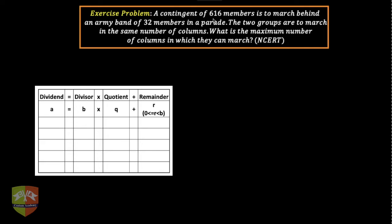The question says a contingent of 616 members—it's always a good practice to highlight the data given in the question paper because I have seen many people take down the questions wrongly. So highlight the data points. A contingent of 616 members is to march behind an army band of 32 members.